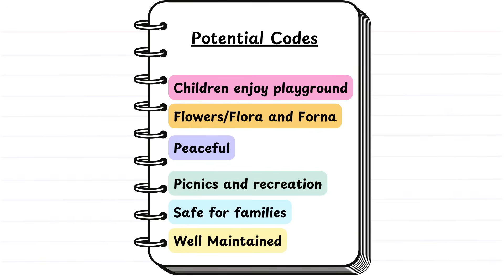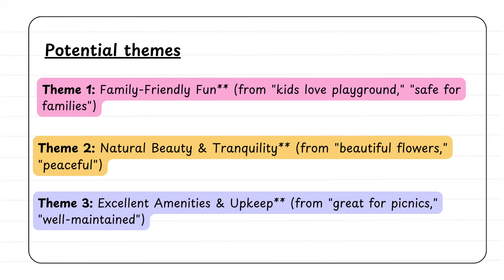So from this, there are some potential codes that you could do, such as children enjoying the playground, flora and fauna about the flowers, about it being peaceful, picnics and recreation, safe for families, and it being relatively well maintained.